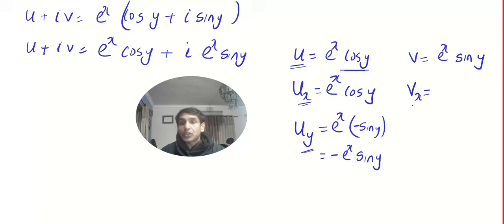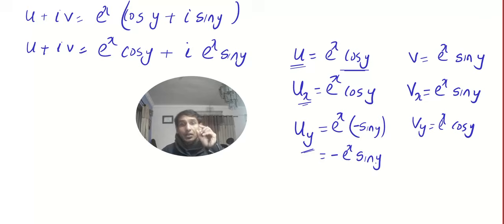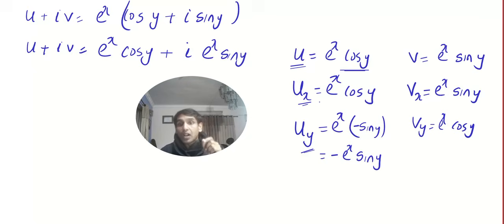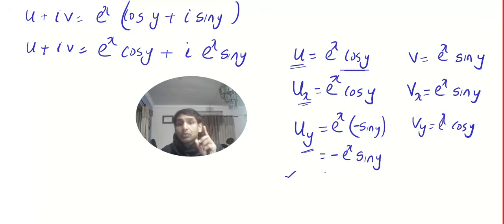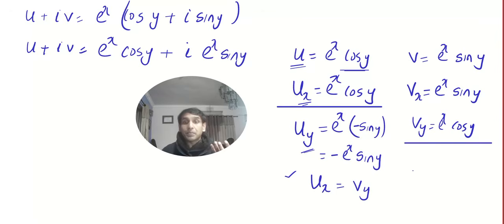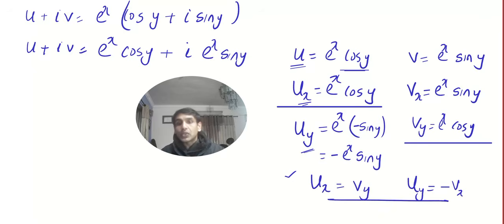For vx, differentiate v with respect to x — same approach. And vy = e^x·cos y. Now check: are all partial derivatives continuous? Yes — exponential, cosine, and sine functions are all continuous, but you must write this in your exam. Is ux equal to vy? Yes, they are the same. Is uy equal to minus vx? Yes, they are negatives of each other. So the CR equations are satisfied and the partial derivatives are continuous.